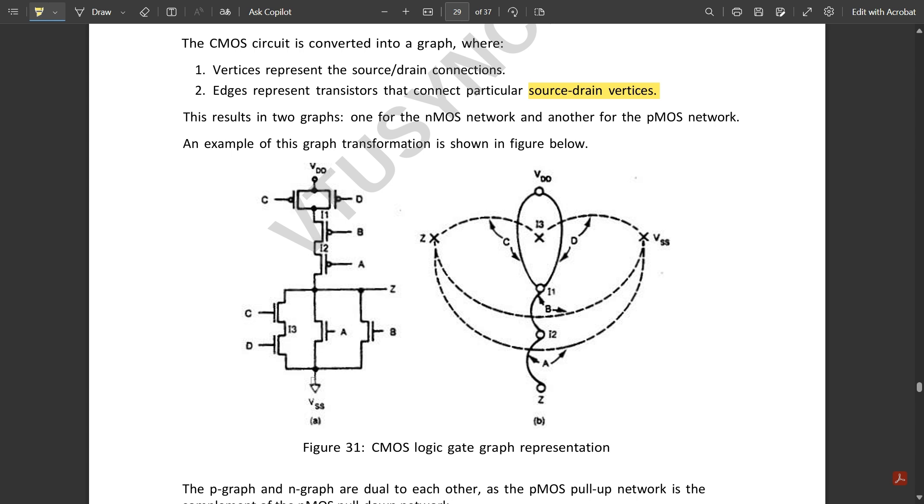For this, they have drawn the Euler path diagram. You see here the circles are mentioned: circles for VDD, and here you have for B, this is for I1, this is I2, and this is Z for the ground.